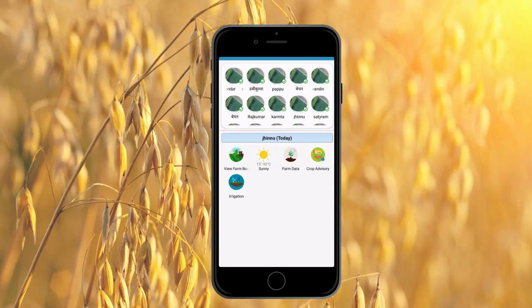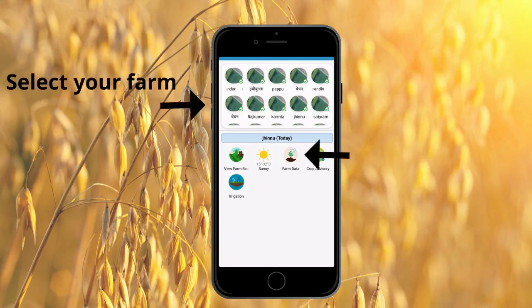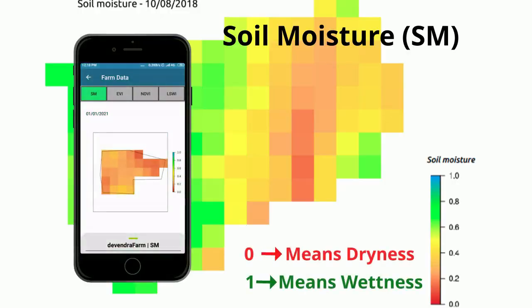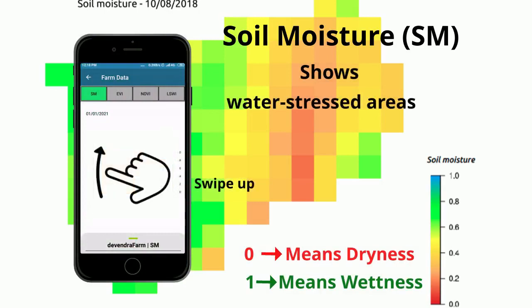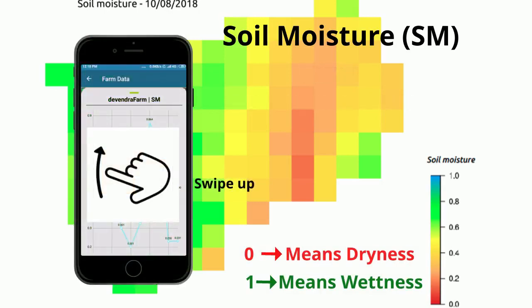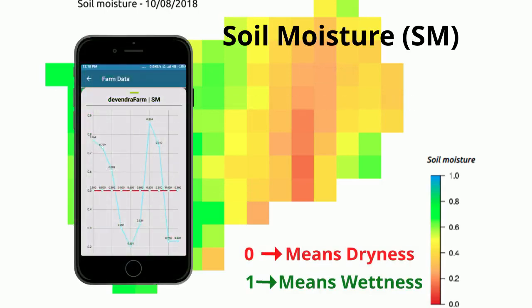Select your farm and hit the Farm Data icon. On the farm data page, hit on Soil Moisture to view a map where 0 indicates dryness and 1 indicates wetness.